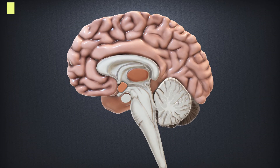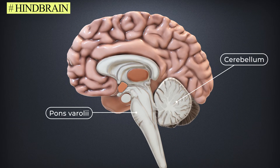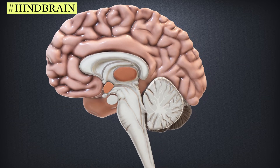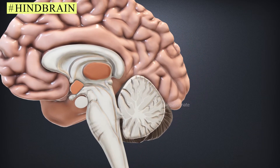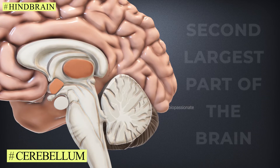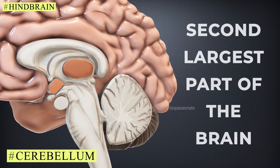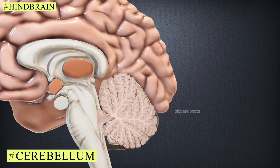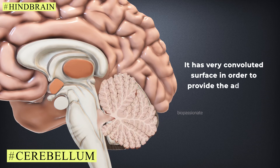The hindbrain comprises the pons, cerebellum, and medulla oblongata. The cerebellum is the second largest part of the brain. It has a very convoluted surface in order to provide additional space for many more neurons.